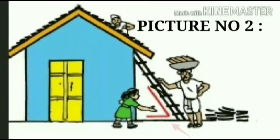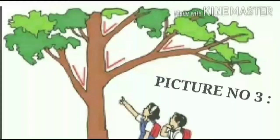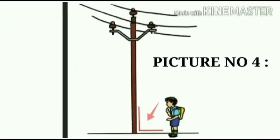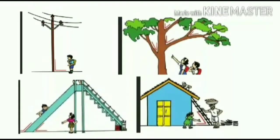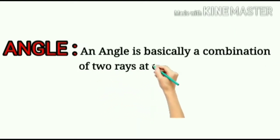Observe the following pictures. We see angles between the ground and the slide. In the second picture you can see that the ladder is making an angle with the ground. In the third picture we can see angles between the trunk and its branches. In picture number four there is an angle between the electric pole and the ground. In our surrounding, wherever we see two lines meeting, there is an angle. The angle is basically a combination of two rays at a common point.